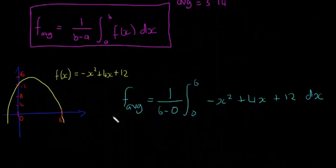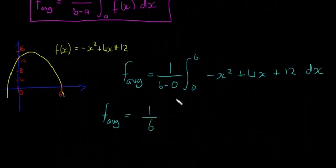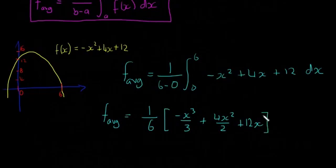Hopefully there you see that it actually isn't as confusing as it looks. You just need to remember that 1 over (b - a), and then you have to just integrate it, a definite integral with whatever your limits of integration are. So f average, this is going to be 6 - 0, which is just 1 over 6. If we integrate this, it's going to be -x³/3 + 4x²/2 + 12x.